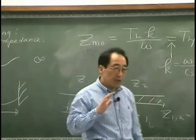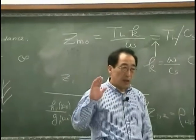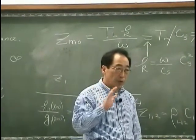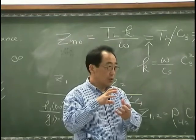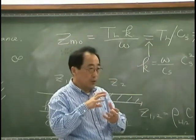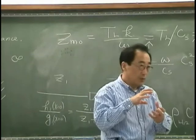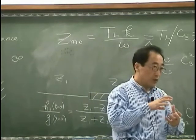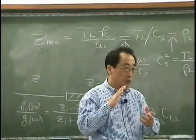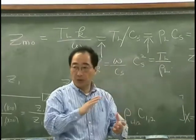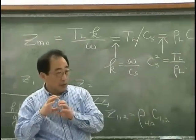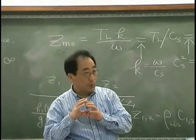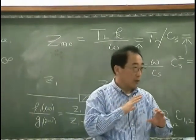Impedance is the ratio between force and velocity. If impedance is in phase, means that when I put the force, then the string would move with the velocity that is in phase with the force. So when I push it, the string would be pushed with the same phase.